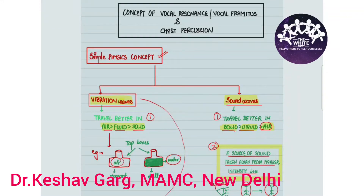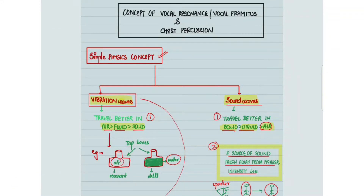In this video we will be discussing the interpretation of vocal resonance, vocal fremitus, and chest percussion in different respiratory diseases. We will understand them using a simple physics concept. In physics there are two types of waves: vibration waves and sound waves. Vibration waves travel better in air than fluid or solid, whereas sound waves travel better in solid than liquid than air.